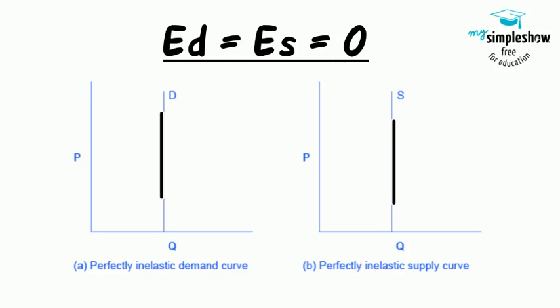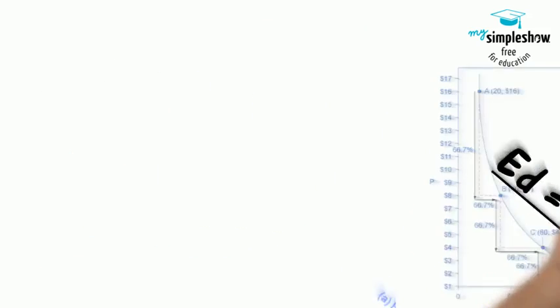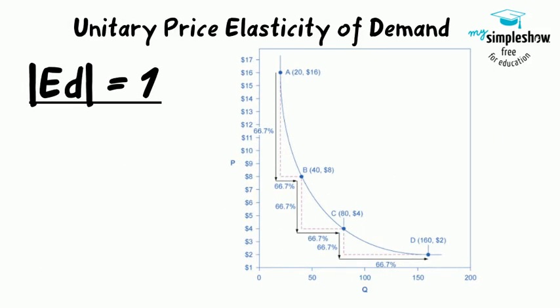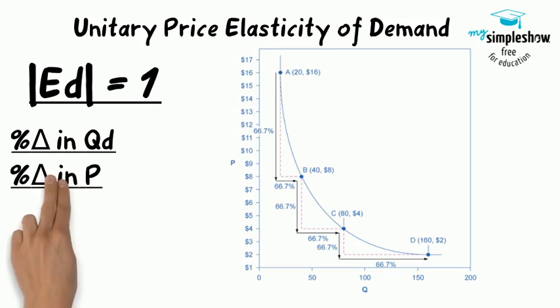The vertical supply curve and vertical demand curve show that there will be zero percentage change in quantity demanded or supplied, regardless of the price. Constant unitary elasticity in either a supply or demand curve occurs when a price change of 1% results in a quantity change of 1%.